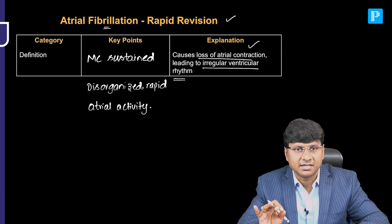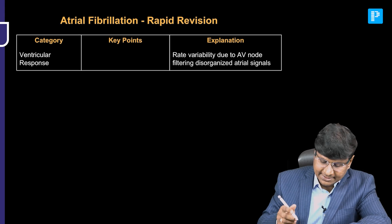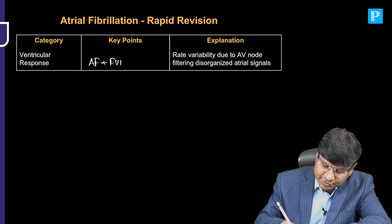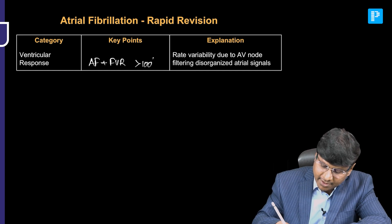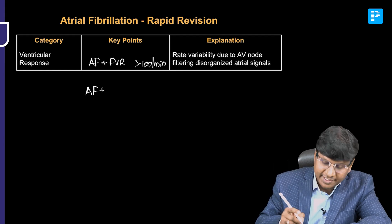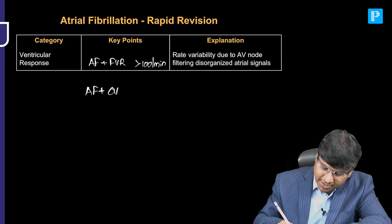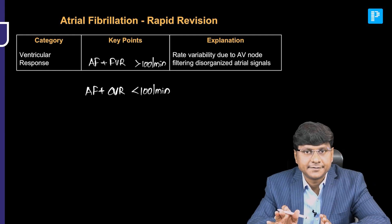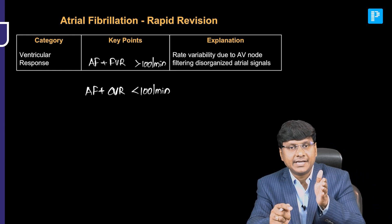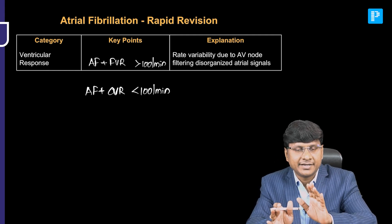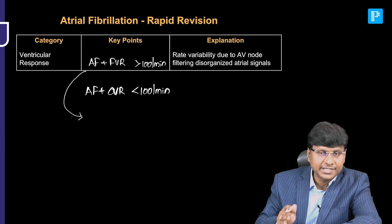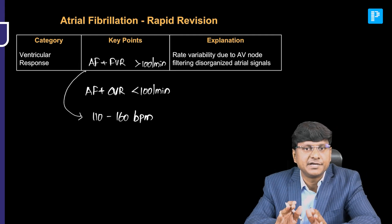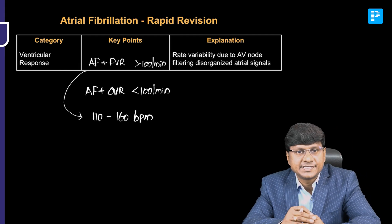Regarding the ventricular response in atrial fibrillation: there can be AF with fast ventricular response where the ventricular rate will be more than 100 per minute. When the individual is on treatment, there will be AF with controlled ventricular response where the rate is less than 100 per minute. Typically the ventricular rate will be in a range of 110 to 160 beats per minute.